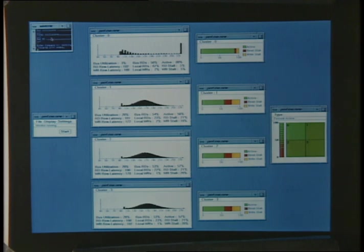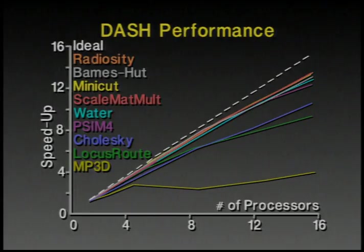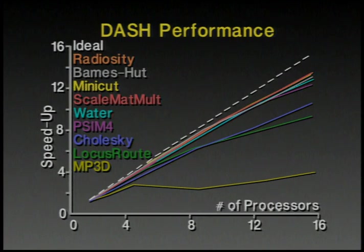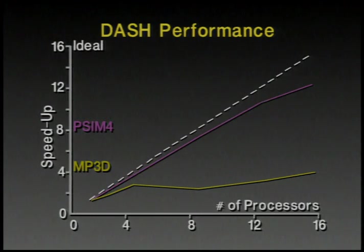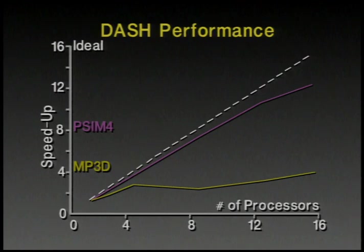The MP3D application was originally written for a vector supercomputer and effectively streams its entire memory image — a three-dimensional representation of space — through the processor. We rewrote this application as PSIM-4, a more sophisticated version that includes more complicated chemistry of the upper atmosphere. PSIM-4 obtained substantially better performance because it pays more attention to locality of access and uses a more sophisticated data structure to improve locality. So with some work, we can obtain good performance even on a program whose initial performance was quite dismal.